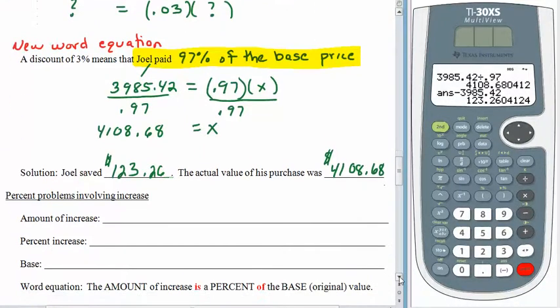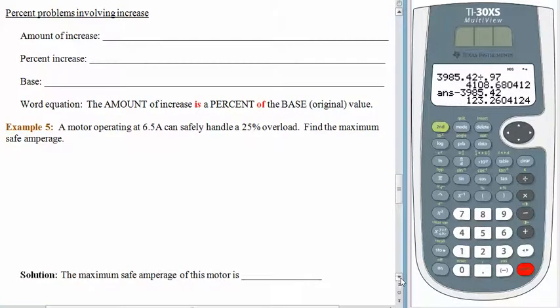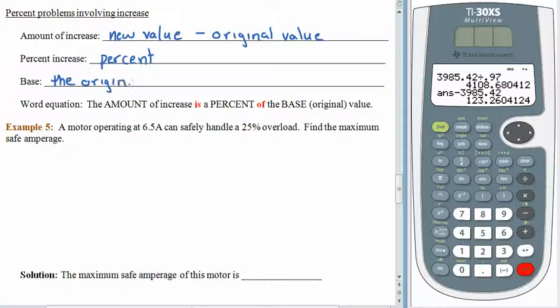Let's see, problems involving increases. Problems involving increases are just like problems that involve sales tax, right? Sales tax is an amount that you add on to something and an increase is an amount that you add on to something. These are just a little more general and don't have all of the store situations with them. So, if you want the amount of the increase, we would take the new value and subtract off the original value. The percent increase, well, that's just the percent. And the base is the original, just like we talked about before. When things increase, they increase from a starting point.